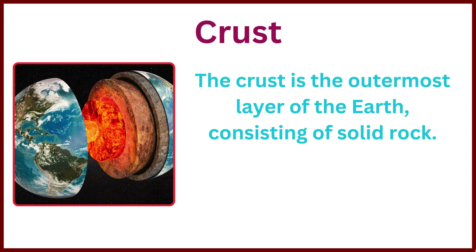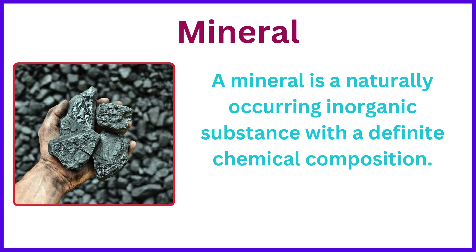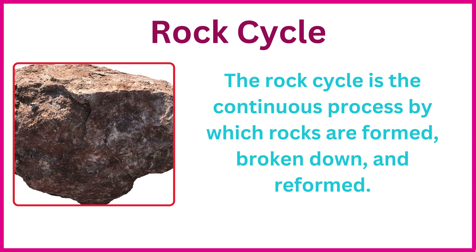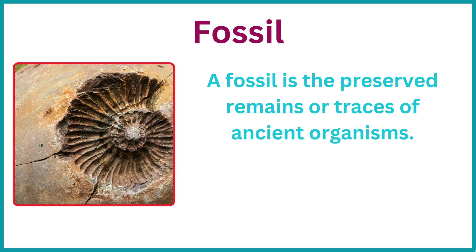The crust is the outermost layer of the earth, consisting of solid rock. A mineral is a naturally occurring inorganic substance with a definite chemical composition. The rock cycle is the continuous process by which rocks are formed, broken down, and reformed. A fossil is the preserved remains or traces of ancient organisms.